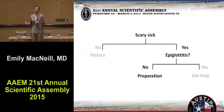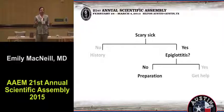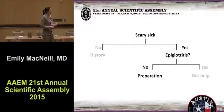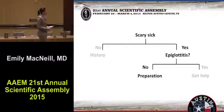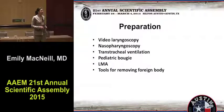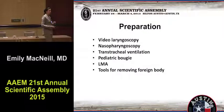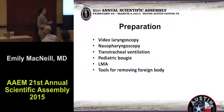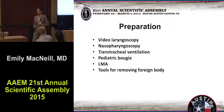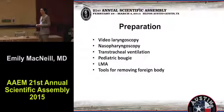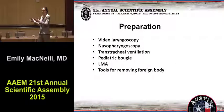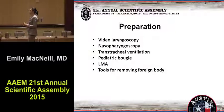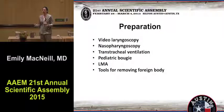If it's not epiglottitis, they may have a foreign body that you need to go after. Be prepared ahead of time. What are the tools you have at your disposal? Do you have video laryngoscopy at your shop? Do you have the ability to do nasopharyngoscopy? Can you borrow it from the OR? How are you going to do transtracheal ventilation? Everybody should know exactly what they have in their shop to do this. Do you have your pediatric bougie? Do you have LMAs? What other adjuncts do you have at your disposal if this scenario were to occur?